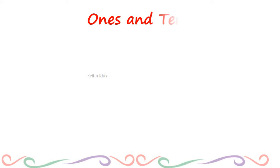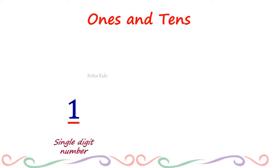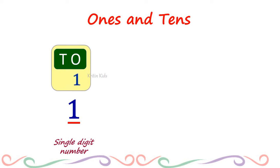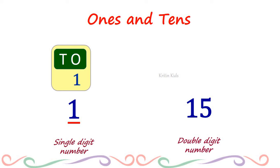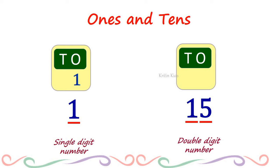1s and 10s are the place value of a number. Let's learn this with an example. Here is number 1. Number 1 is a single digit number, means it is a single number. Place value of 1 is 1s. Let us take one more example. The number is 15. 15 is a double digit number, means there are 2 digits. The right hand side 5 has place value 1s and the left hand side number 1 has the place value 10s.